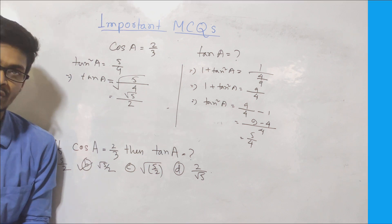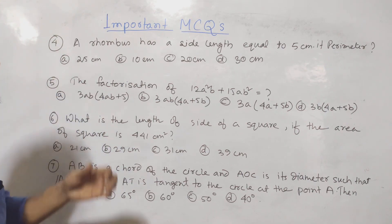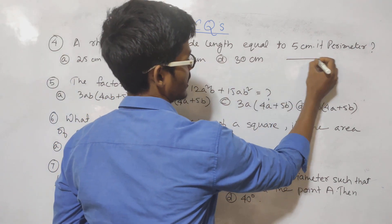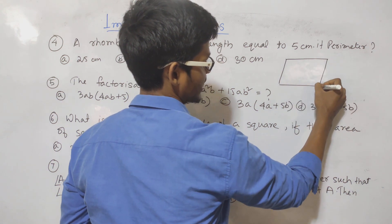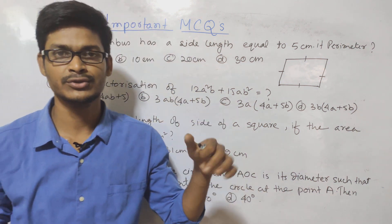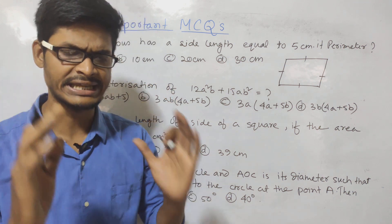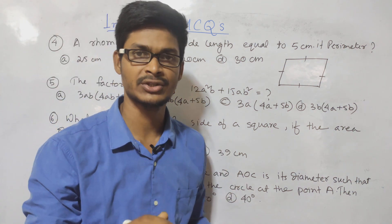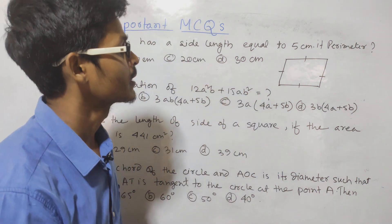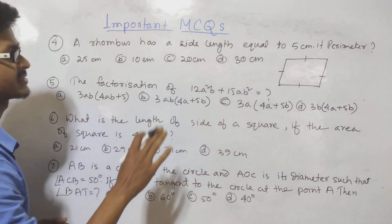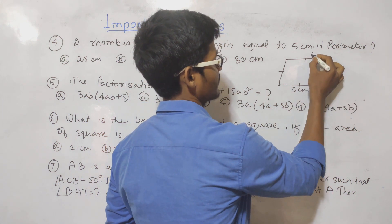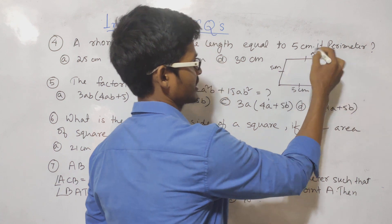For a rhombus with side length equal to 5 centimeters, its perimeter is asked. A rhombus has all four sides equal. So the perimeter is 4 times 5, which equals 20 centimeters.